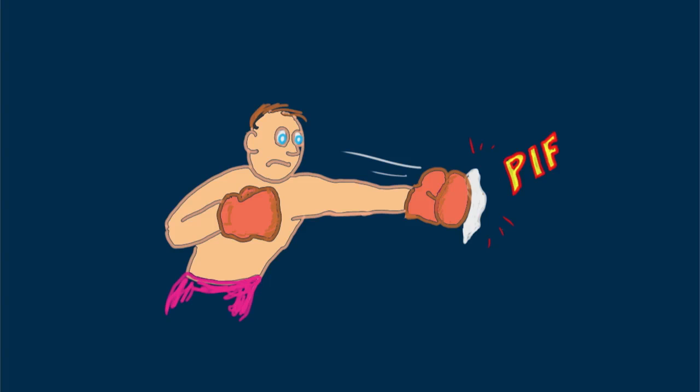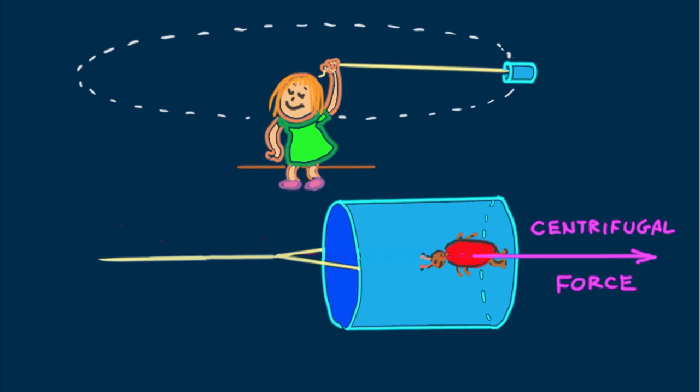The point is that a force can only exist when there's an action-reaction counterpart. No counterpart, no force. The centrifugal force in the bug has no counterpart. Nothing's pulling back.